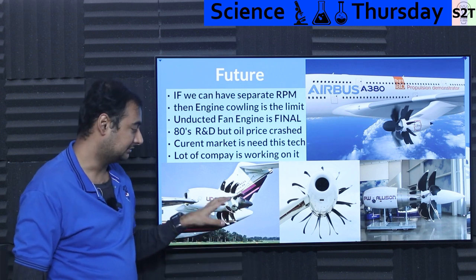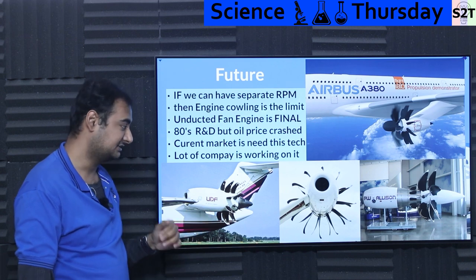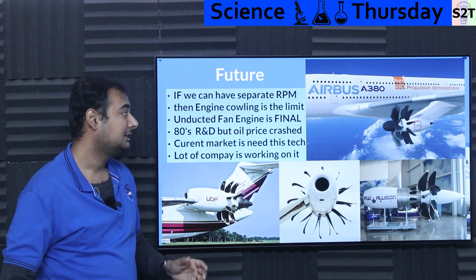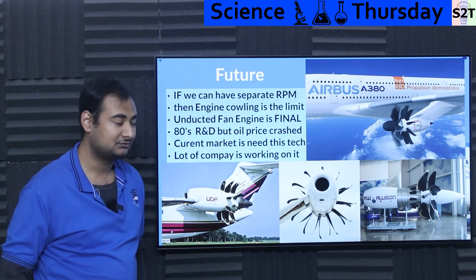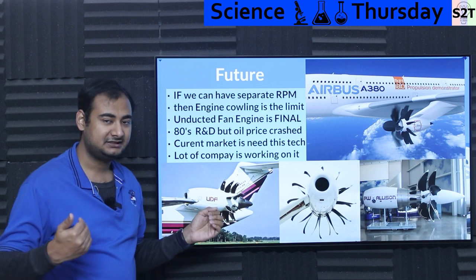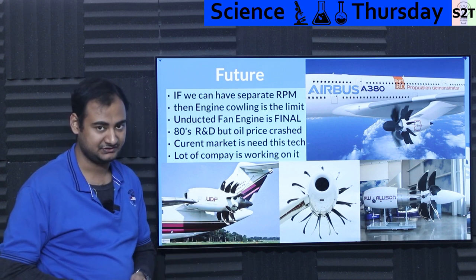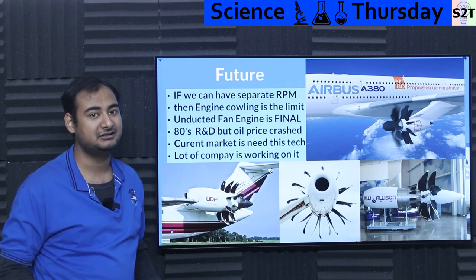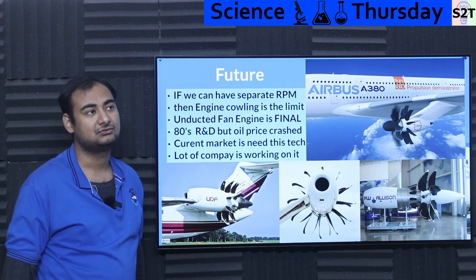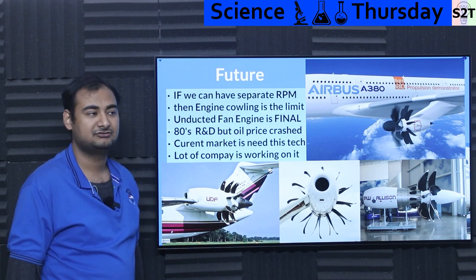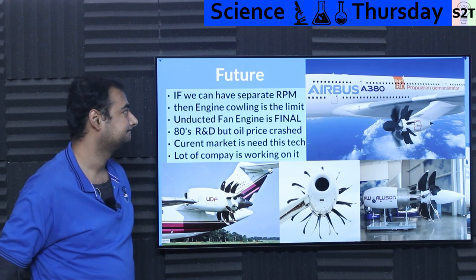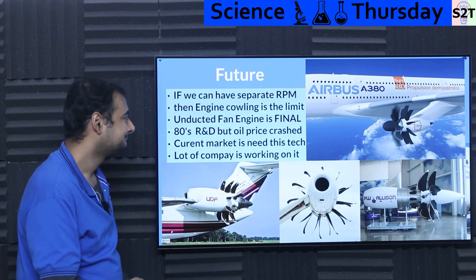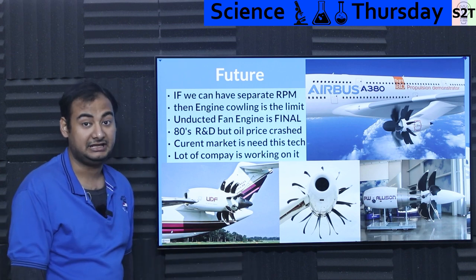A lot of companies are working on unducted fan design at this point in time. CFM is leading and General Electric says they are reviving the system. Boeing and Airbus both want to look into this because back in the day it proved we can have very high efficiency — more mileage than what we have right now. By the 2030s we should have the first trial; let's stretch it to 2035. This is aviation.